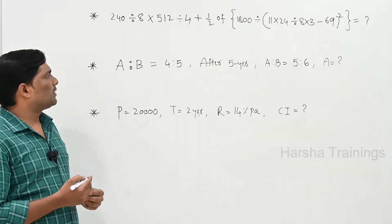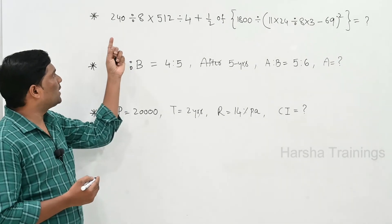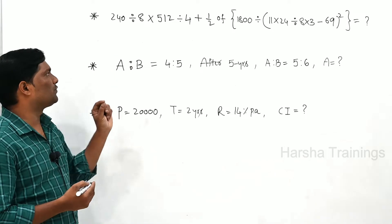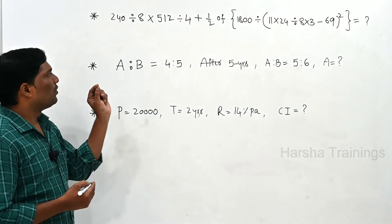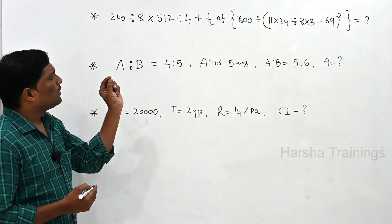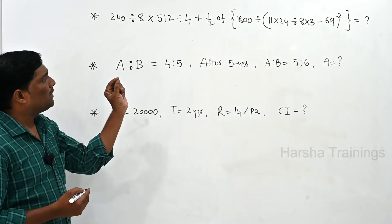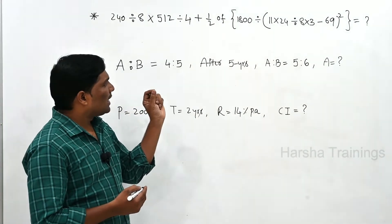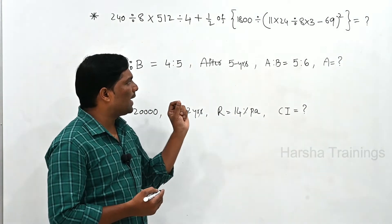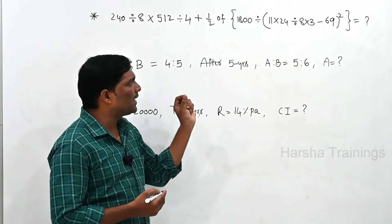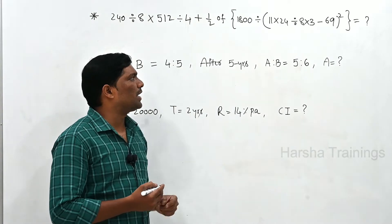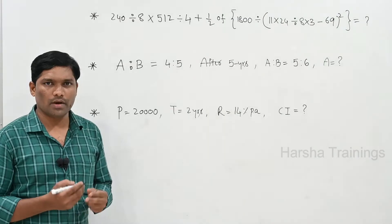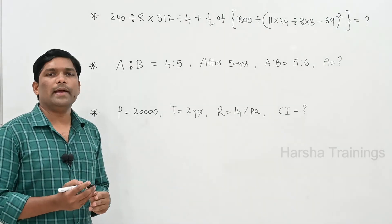Look at the screen guys, here is the first question: 240 divided by 8 into 512 divided by 4, plus half half. Next part: 1800 divided by brackets — 11 into 24 divided by 18 into 3, minus 69, whole square — is equal to how much?